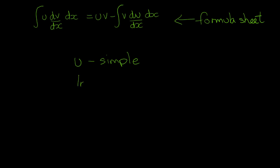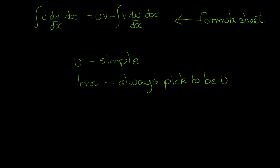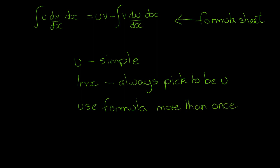One particular thing to look out for: if you have ln(x) as one of the two functions, or a variation thereof, always pick this to be your u. If you look at the formula, u doesn't appear again on the right-hand side, so you don't have to integrate it — and integrating ln(x) is more of a challenge, although we'll go through how to do that using this formula a little later. Also worth noting: sometimes you may have to use the formula more than once, and I will show you an example where that's the case.